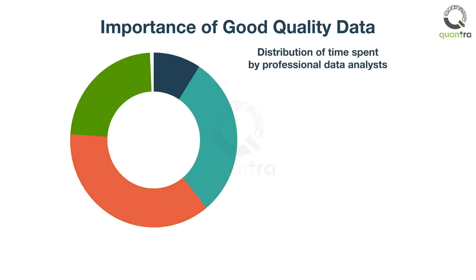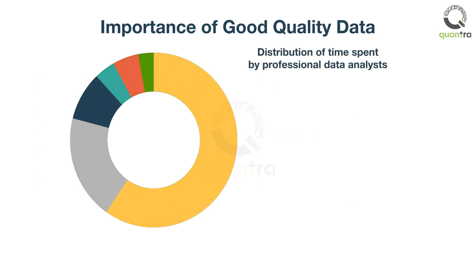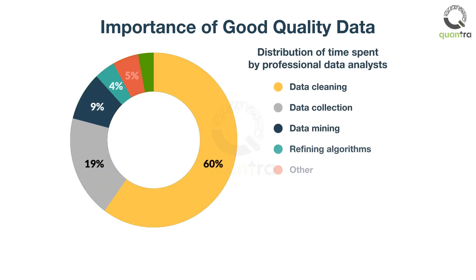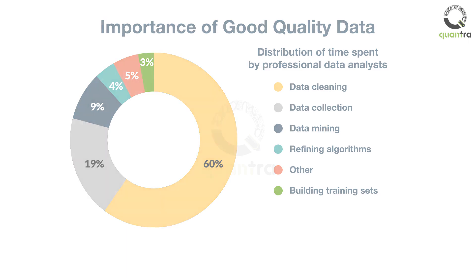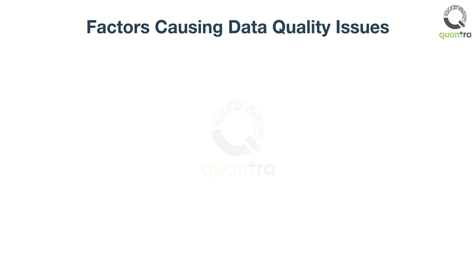A surprising fact is that a professional data scientist spends approximately 60% of his time ensuring that data is of high quality. But why does the data quality issue occur?